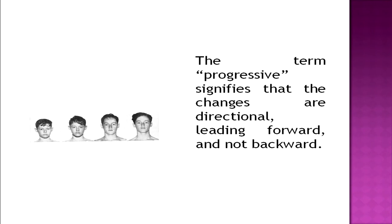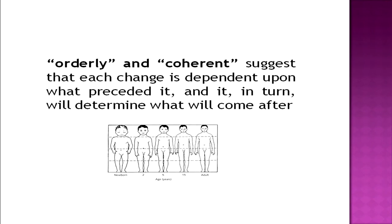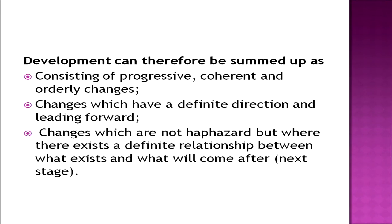As we can see in this picture, development is leading in a forward direction — how a person is growing. 'Orderly and coherent' suggests that each change is dependent upon what preceded it and in turn determines what will come after. Therefore, development can be summed up as consisting of progressive, coherent and orderly changes — changes which have a definite direction, leading forward, and where there exists a definite relationship between what exists and what will come next.